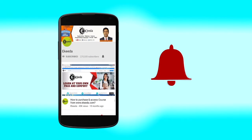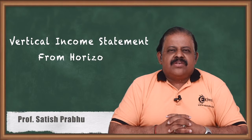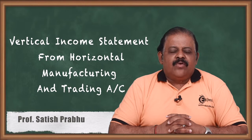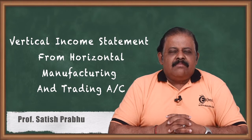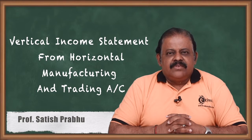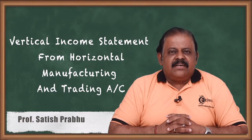Click the bell icon to get the latest videos from Ikita. In this question we are going to learn how to prepare a vertical income statement when a manufacturing account and trading account are given. When a manufacturing account is given, we are required to find manufacturing cost and gross profit, which we can show in a vertical format income statement.